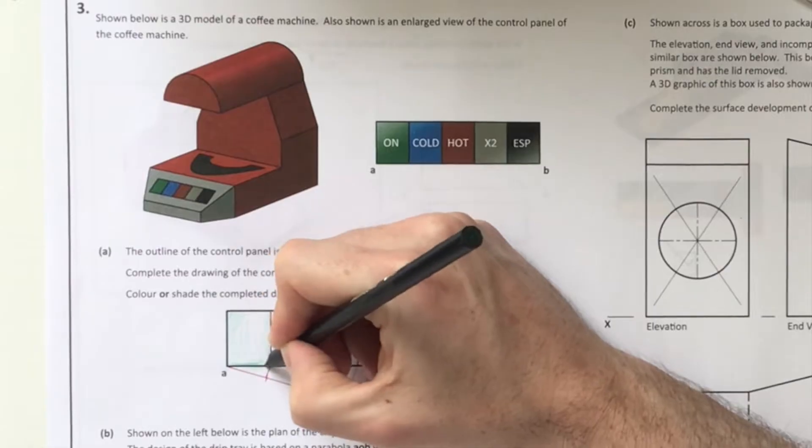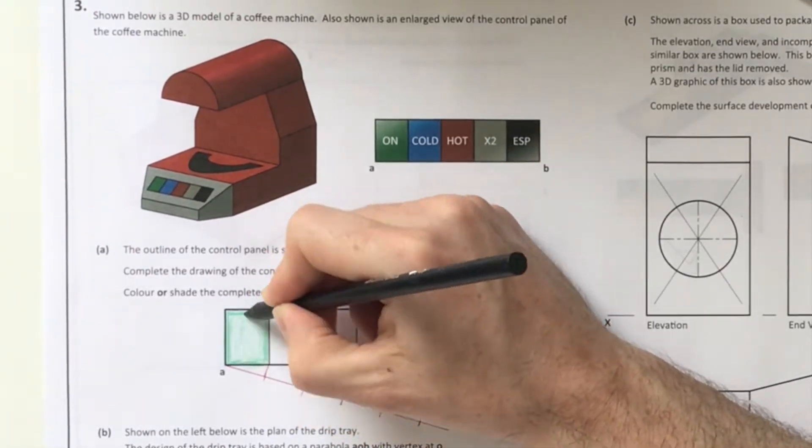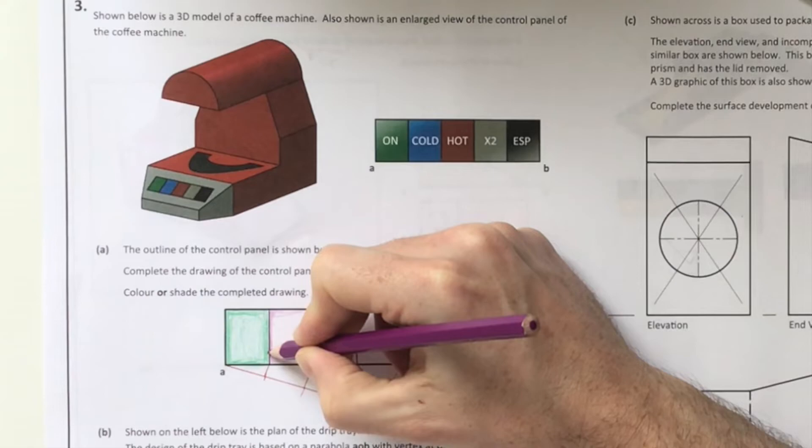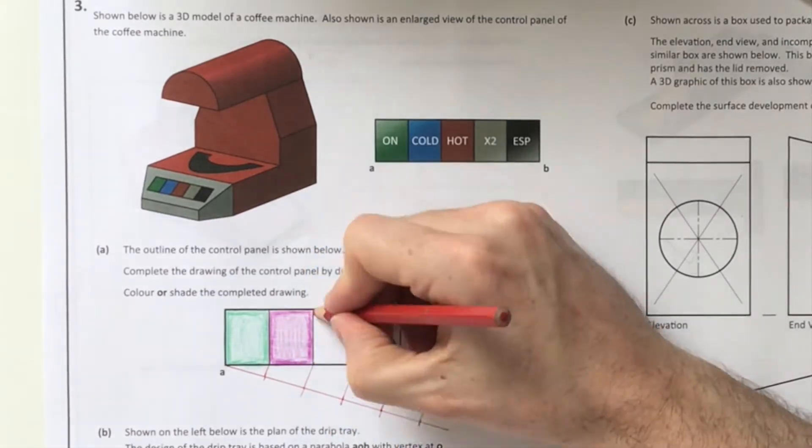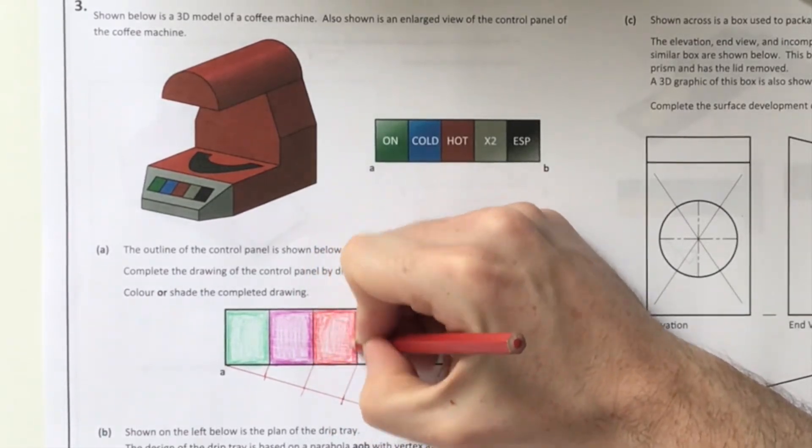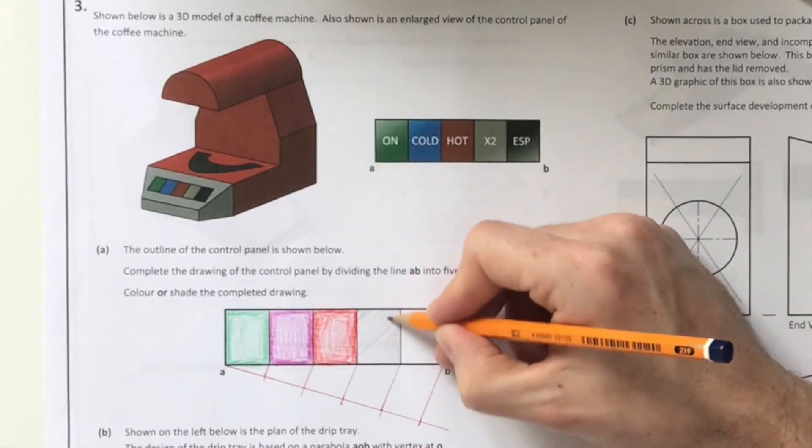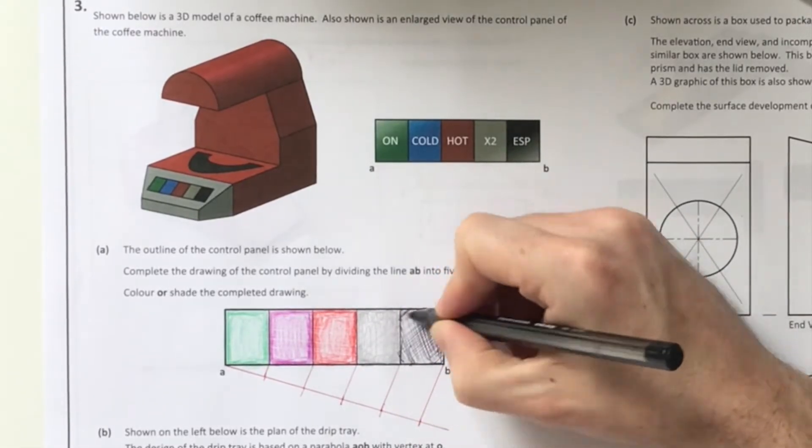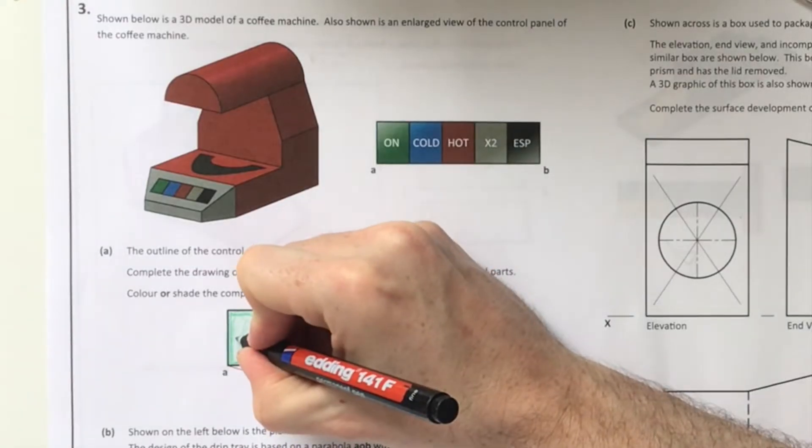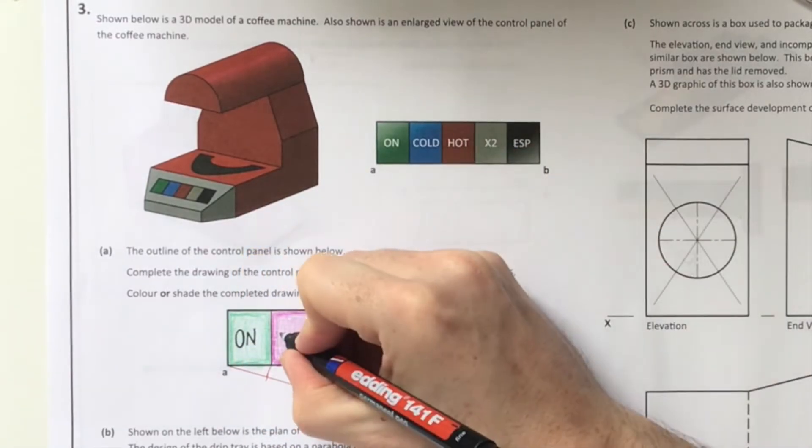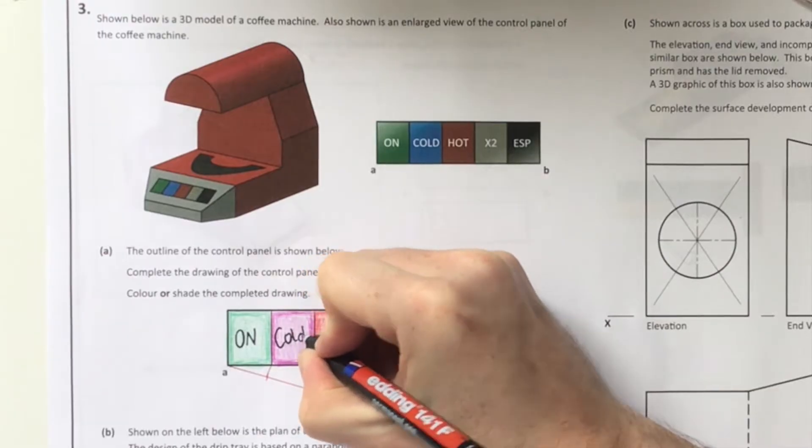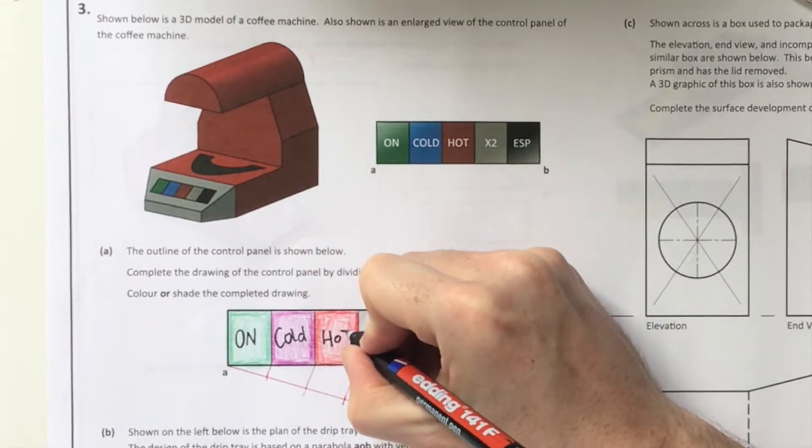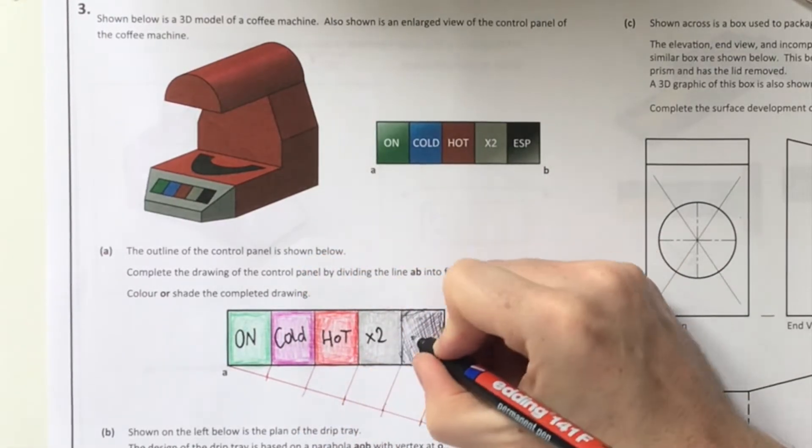I'll speed this part up. I say this to my students all the time - if it says color and shade in the question, there's marks going to it. So make sure you're coloring and shading that in as well. I'm using a combination of pen and pencil to highlight each button. I'll write in all the indicators. That's that question finished.